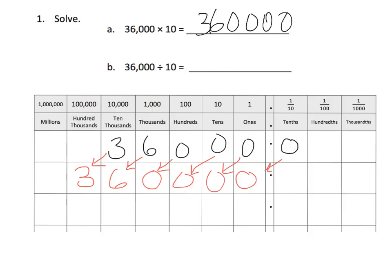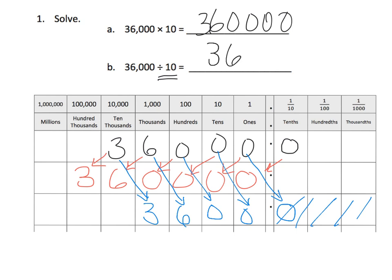And then if we're going to divide by ten, the idea would be each of those digits gets moved one column to the right, because it's getting smaller. So this three would actually move to here, this six would go here, the zero would go here, this zero would go here, and then consequently that zero would go there, which is not necessary. Those trailing zeros are not necessary. So the answer is 3,600.